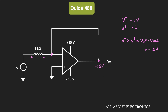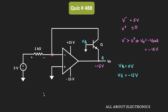If the output of the op-amp is at -15V, let's see what will happen to the transistor. We know that Vb is at 0V, and the emitter terminal is at -15V. Since the base voltage is greater than the emitter voltage, the base-emitter junction will get forward biased, and therefore Vbe will become 0.7V, because the given transistor is a silicon transistor.